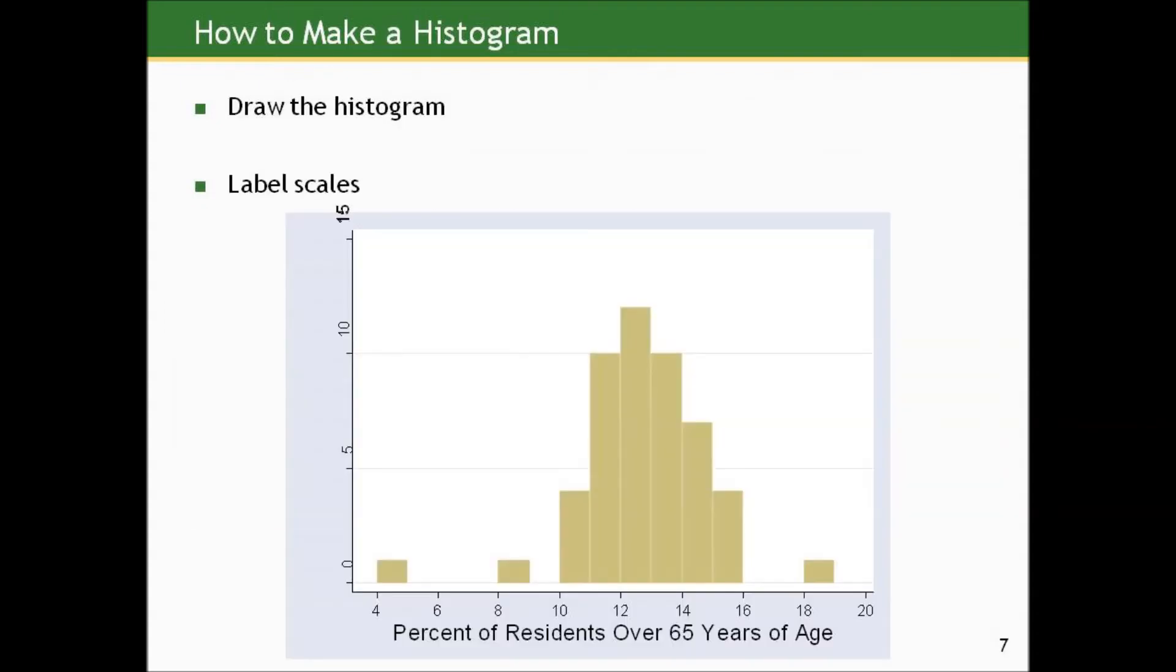And here on this page, you see the histogram, the graphic that corresponds to that tabular summary there. So these bars on the graph actually track the number of states that fall in each of those percentage bins. And this tracks the percentage over 65 years of age. So you can see in the 4 to 5 bin on the left there, there's a bar that actually goes up to 1 because there's only one state. And then there's nothing until we get to the 8 to 9 bin and again goes up to 1. And then we start to see a little more action.